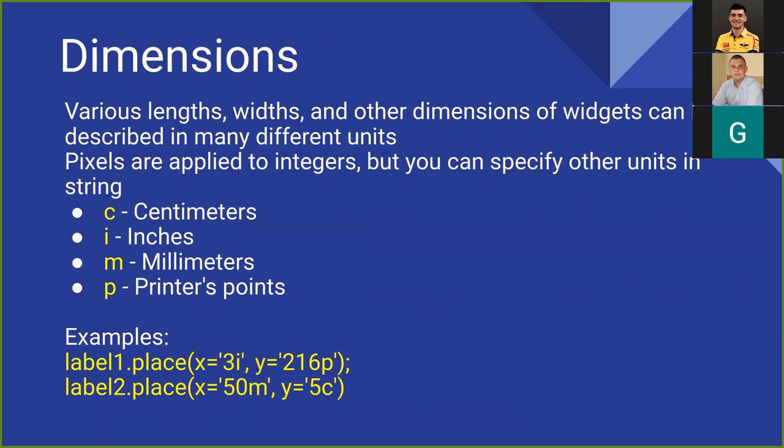Different kinds of lengths, widths, and other dimensions of widgets can be described in many different units. If you set a dimension to an integer, as in our examples, it's assumed to be in pixels. But you can specify units by setting a dimension to a string containing a number followed by: c for centimeters, i for inches (2.54 centimeters), m for millimeters, or p for printer's points (1 inch equals 72 printer points). For example, a first label placed at left 3 inches and top 216 printer points — these are equal. A second label placed at left 50 millimeters and top 5 centimeters — these are also equal.